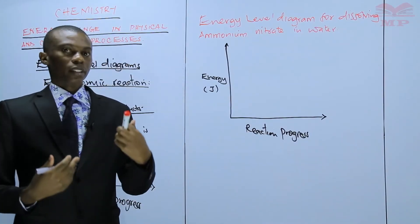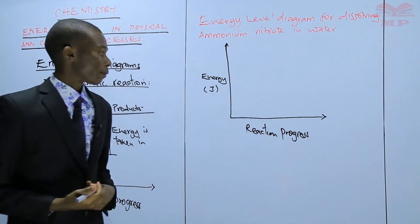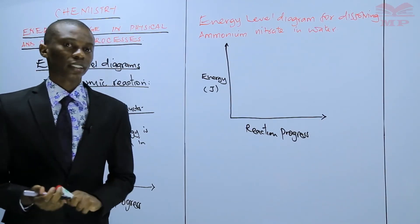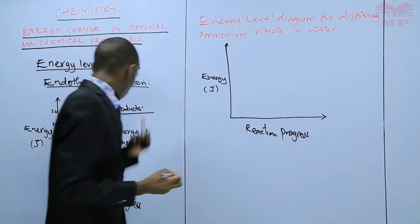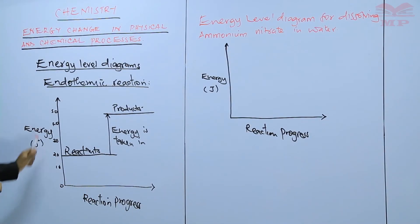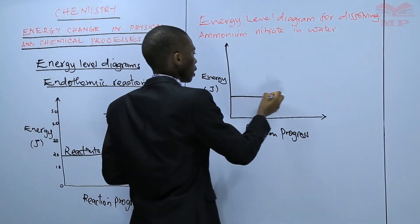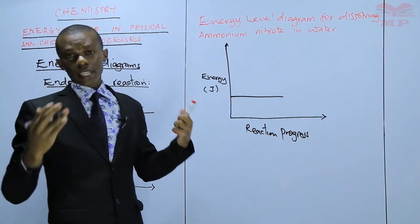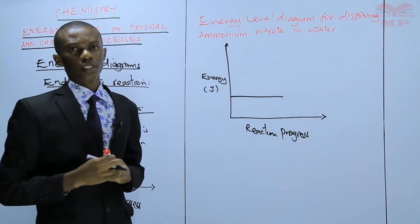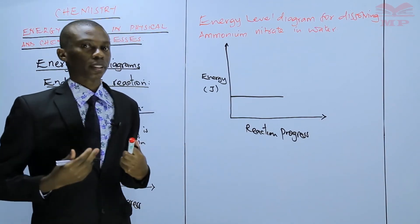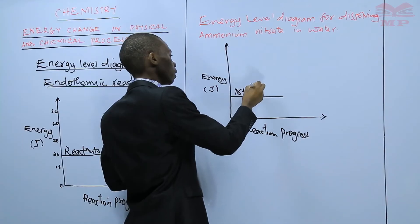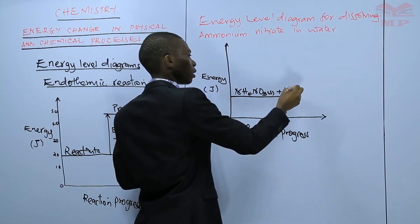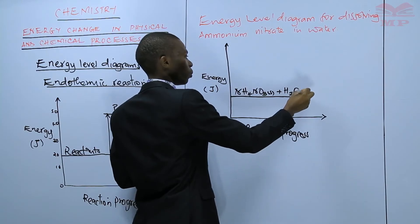The reaction progress can be in minutes or even in seconds. At the beginning of this experiment, the energy of the reactants is lower — around 20 joules, as discussed. The reactants in this case, since you are dissolving ammonium nitrate in water, it is just a dissolution process. So, ammonium nitrate solid, dissolved in water, which is a liquid.